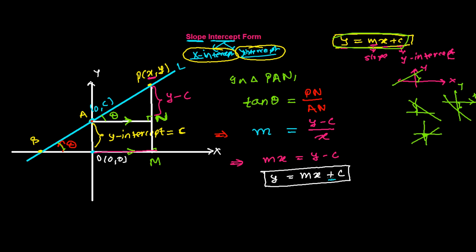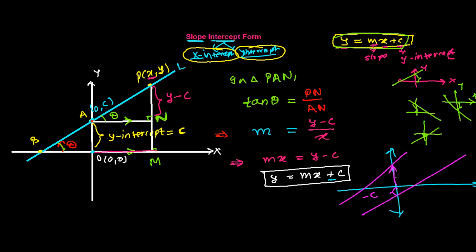One important note: c may be positive or negative. When the line cuts the positive y-axis, c is positive. When the line cuts the negative y-axis, c is negative. So c can be plus or minus depending on where the line intersects the y-axis.